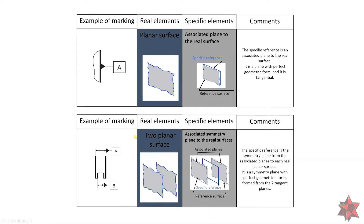Also, if we have a symmetric plane — two planar surfaces — like in the case of datum A and datum B, the real surfaces are the two planar surfaces, and the associated symmetry plane to those real surfaces is the specific reference. The specific reference is a symmetry plane with perfect geometrical form, formed from the two tangential planes. So you make a tangent plane and a tangent plane, and the symmetry plane comes from those two tangent planes.